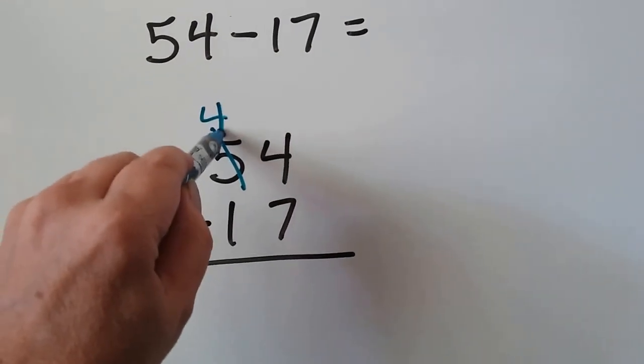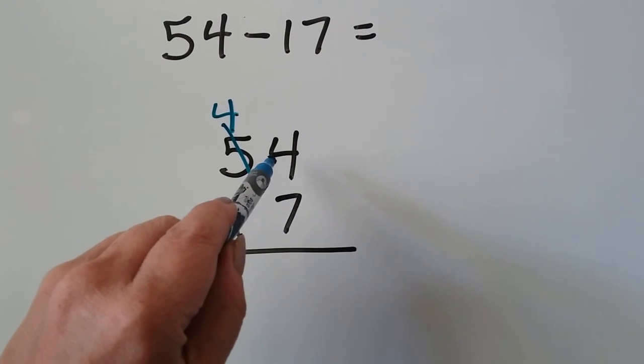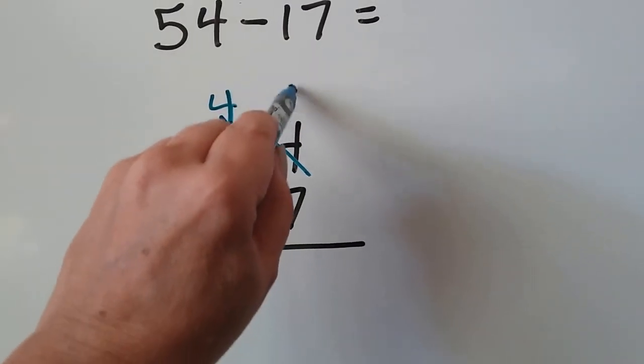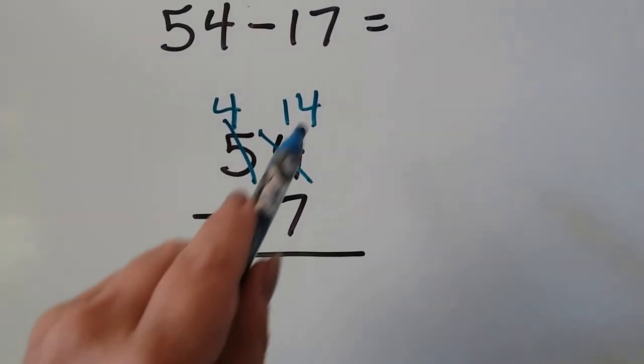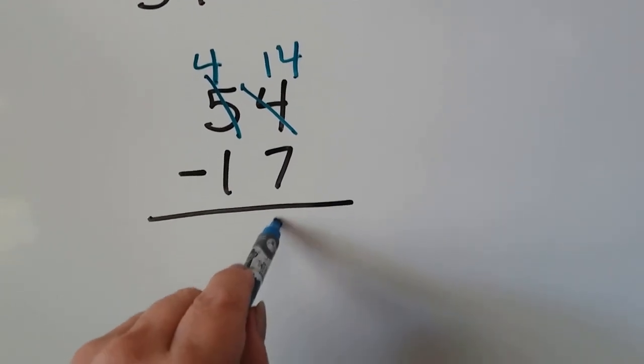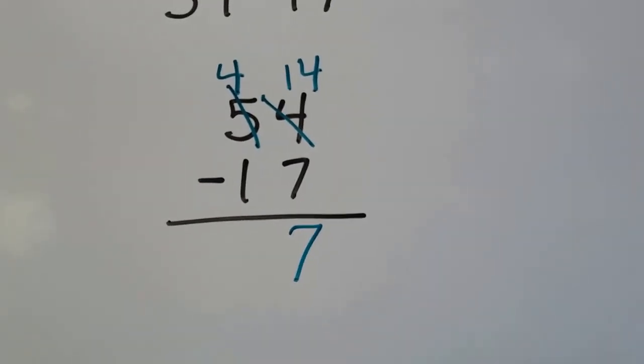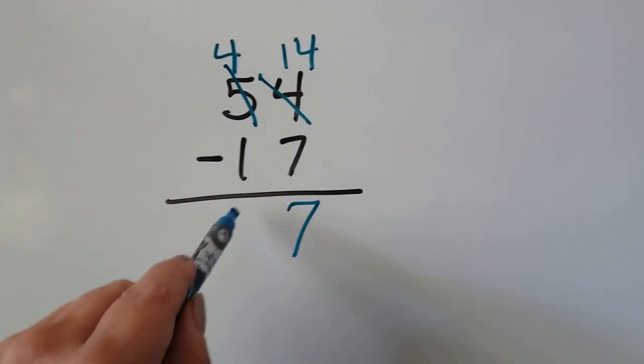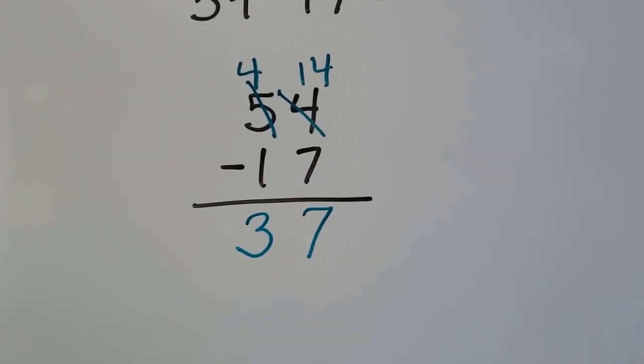The 5 is going to become a 4. We give the 10 to the ones place, so the 4 becomes a 14. 14 minus 7 is 7. That's a double, isn't it? And 4 minus 1 is 3. Our difference is 37.